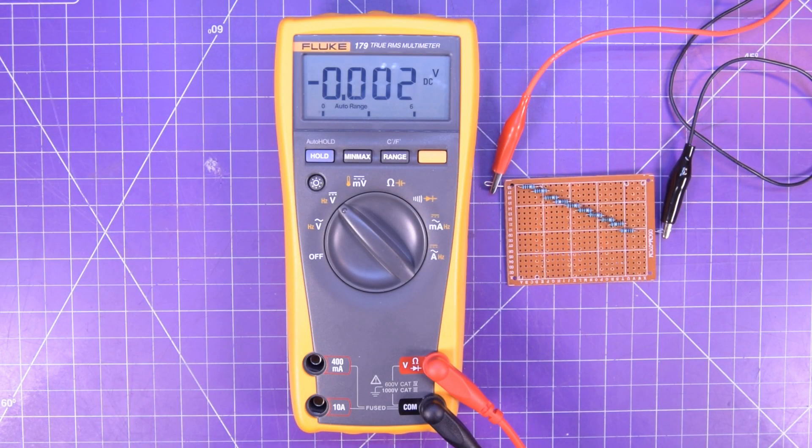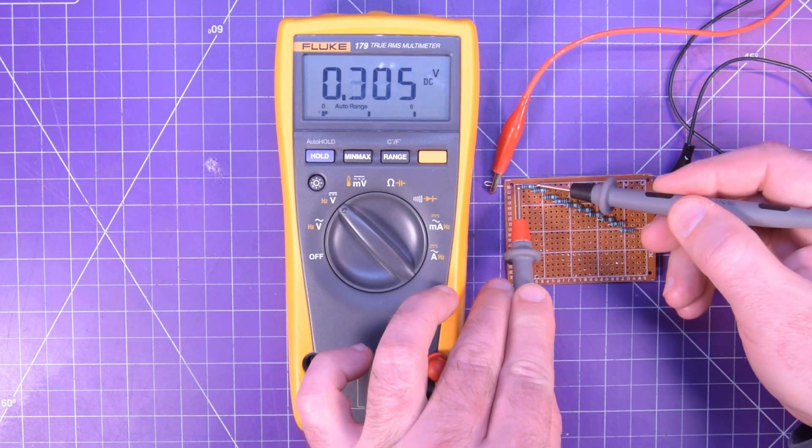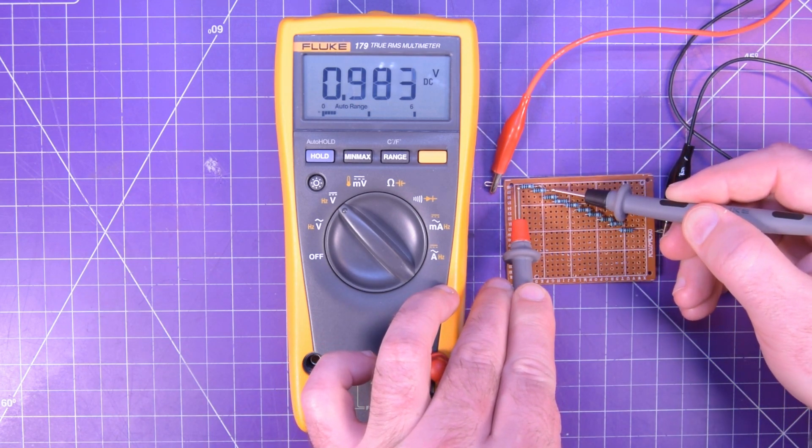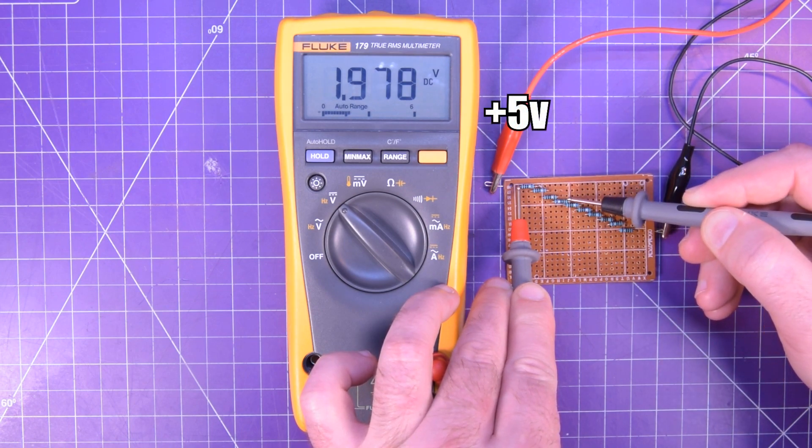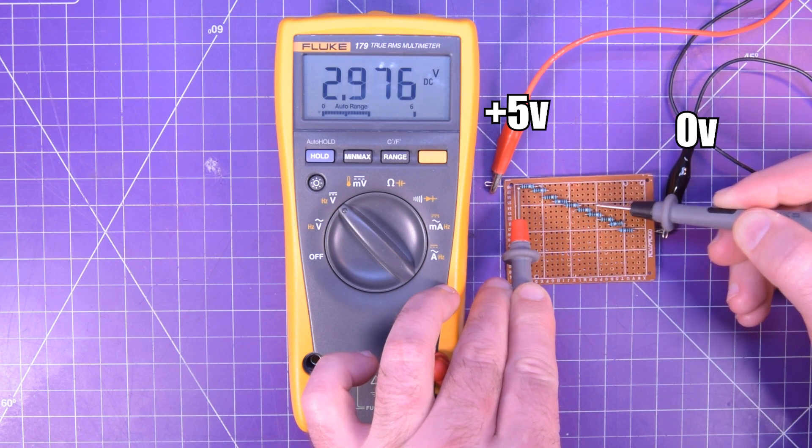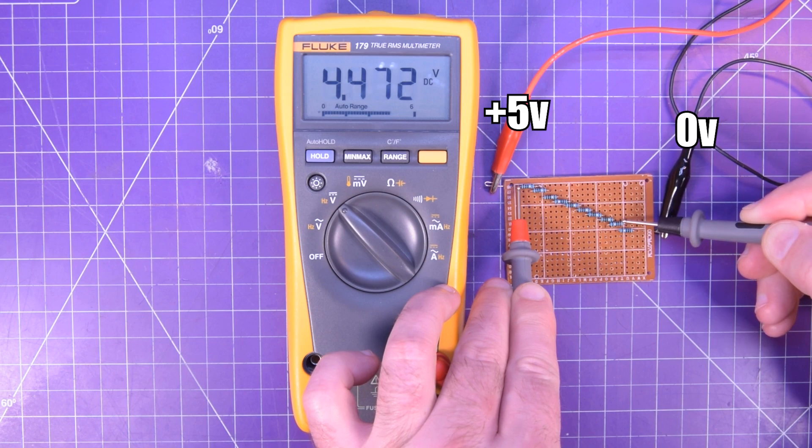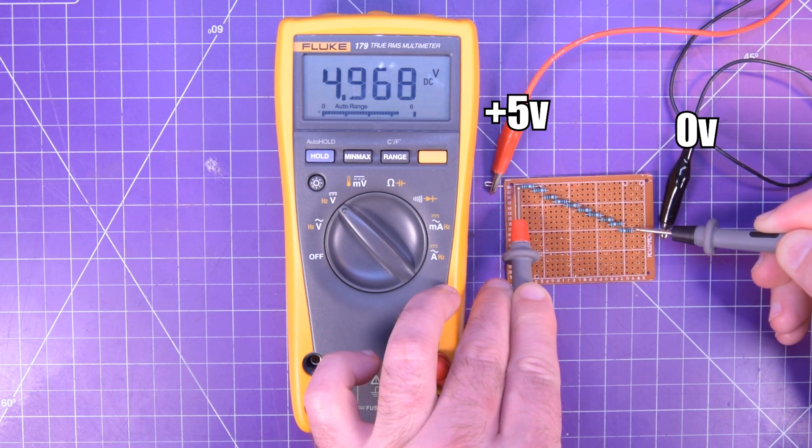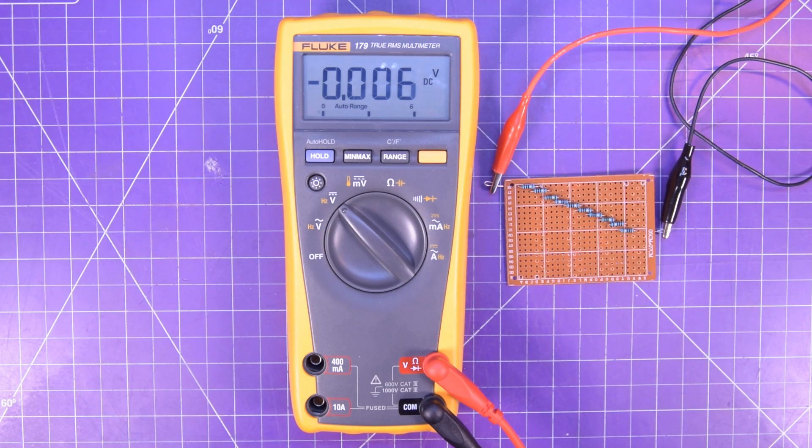Don't forget that voltage measurements are relative, meaning it's the voltage present at the red lead minus the voltage present at the black lead. Over at the red connection, we have plus 5 volts. Over at the black connection, we have 0 volts. Therefore, testing all these resistors in between gives us a figure in between 5 and 0 volts. Make sure you're subscribed so you don't miss my video on this specific topic.